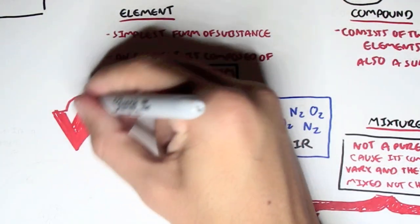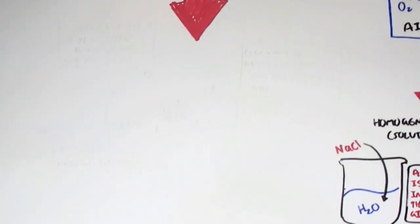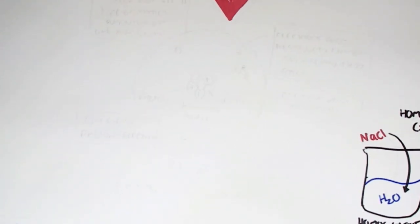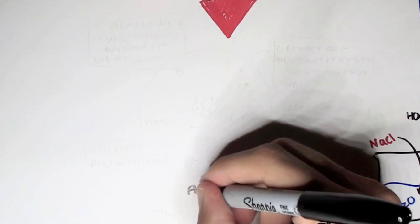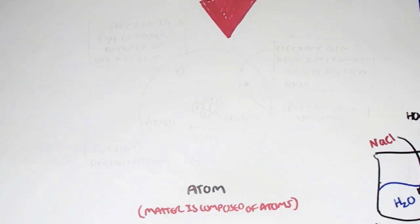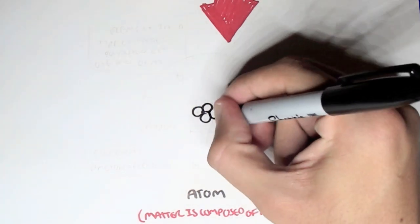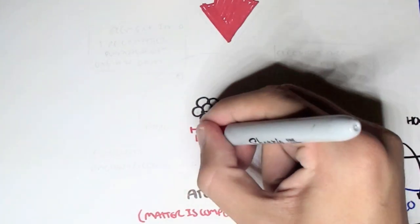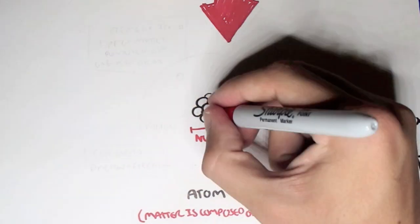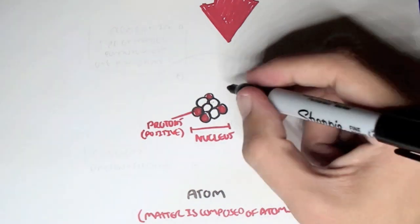Now let's go back to elements. As we have learned, an element is composed of one type of atom. Now what is an atom? Matter is actually composed of atoms. Everything we see is composed of atoms. A typical structure of an atom, the center of the atom, also called the nucleus, consists of protons and neutrons. Protons are positively charged, and neutrons are just neutral.